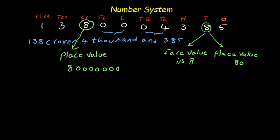I hope you understood how to use commas to represent the number. In the international system, the first three digits use one comma for the ones place, next comma after hundreds, then after lakhs. In this way it becomes 8 crores. I hope you understood how to recognize and read the number in both the international system and Indian system.